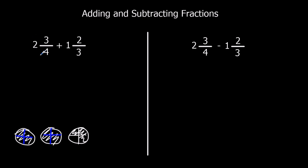So I've got 2 times 4, which is 8 — that's the number on the outside times the bottom number, so that's how many quarters I've got in the 2 whole ones — plus the 3 extra ones, so I've got 11 quarters.